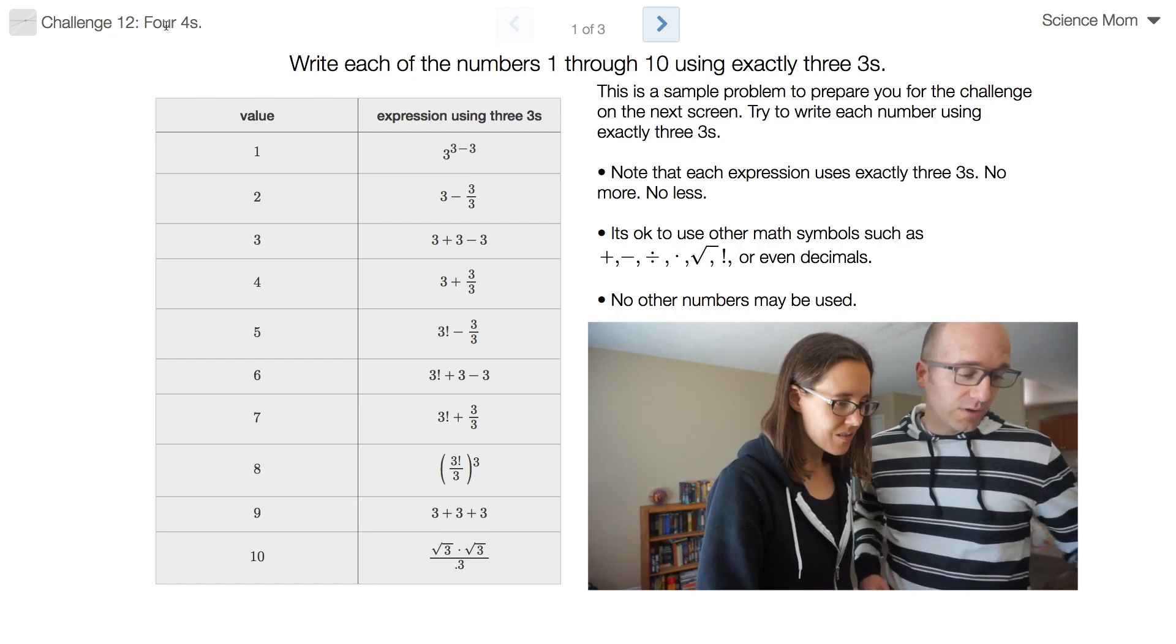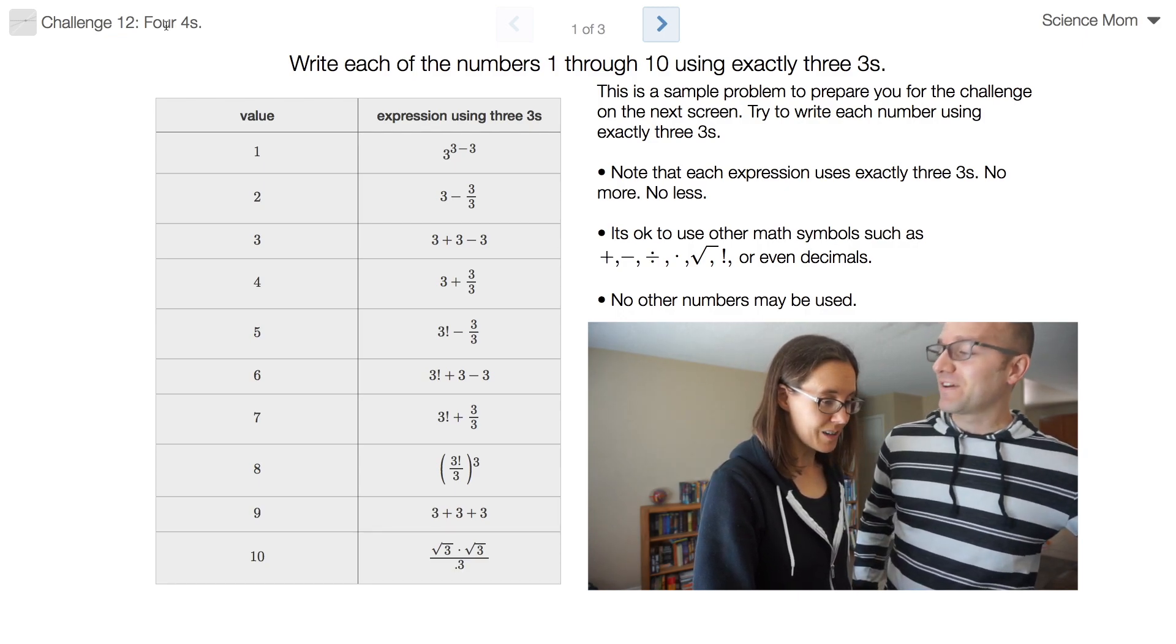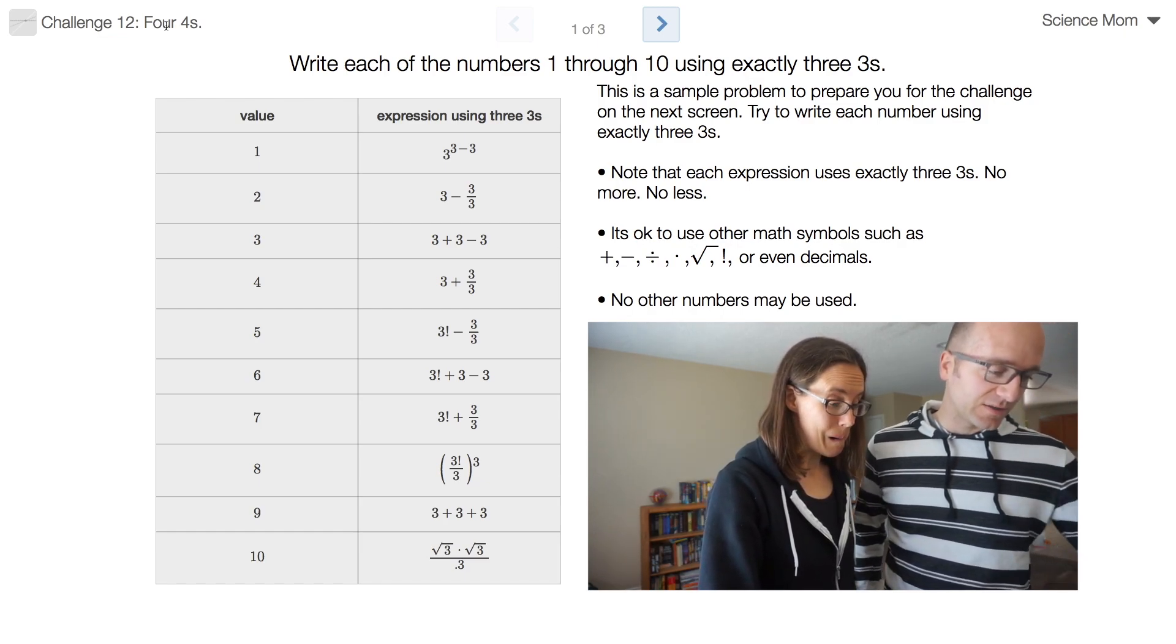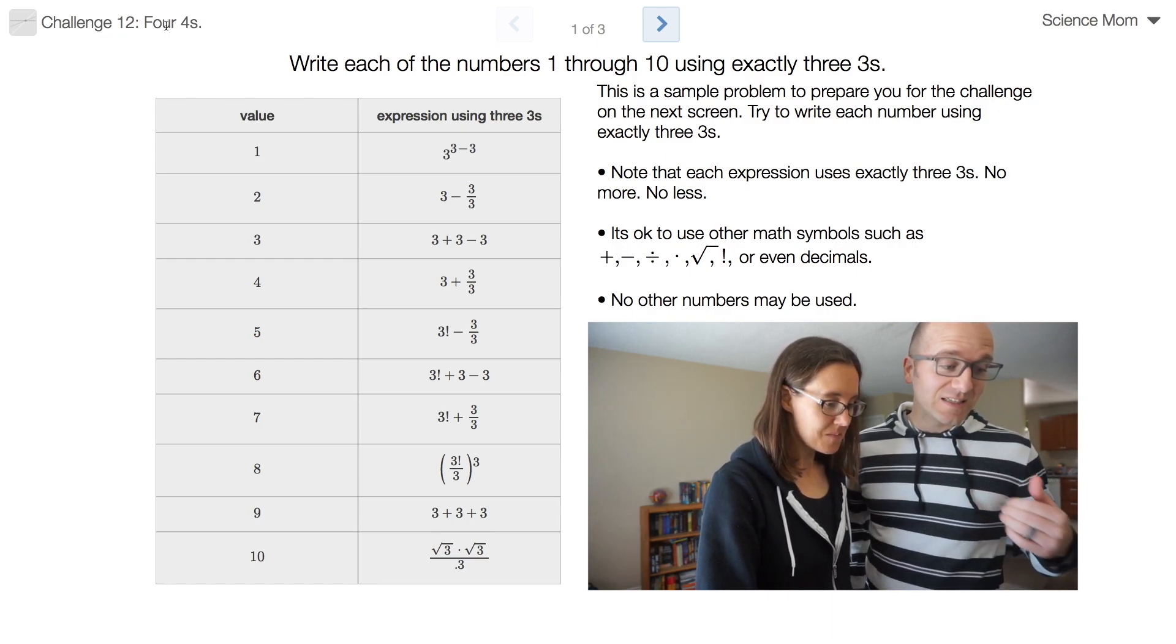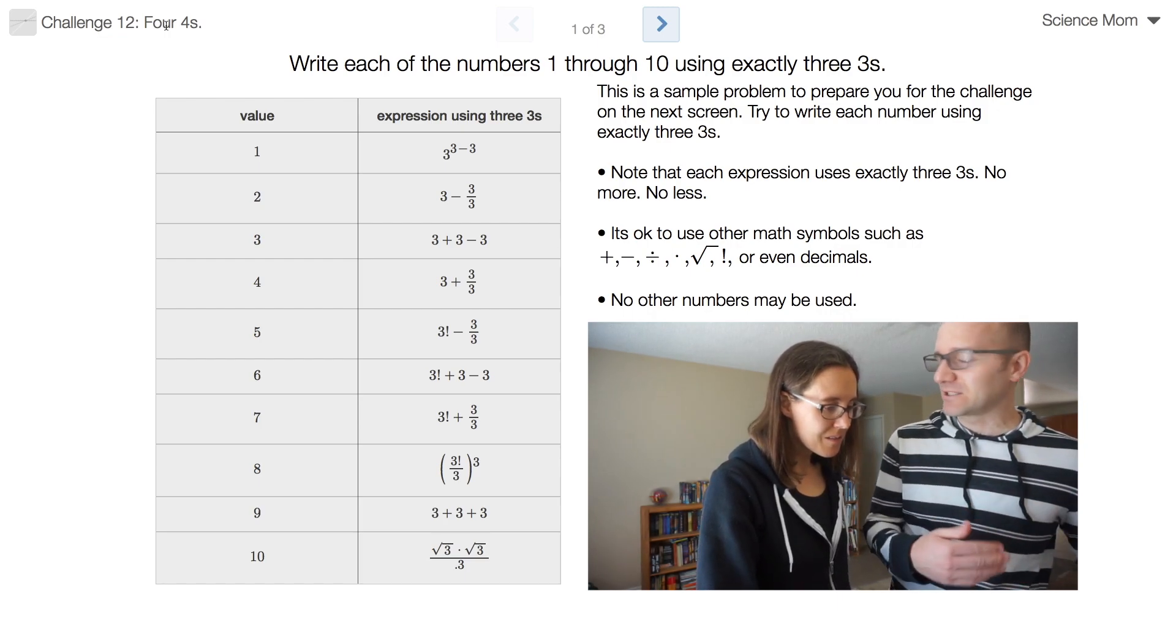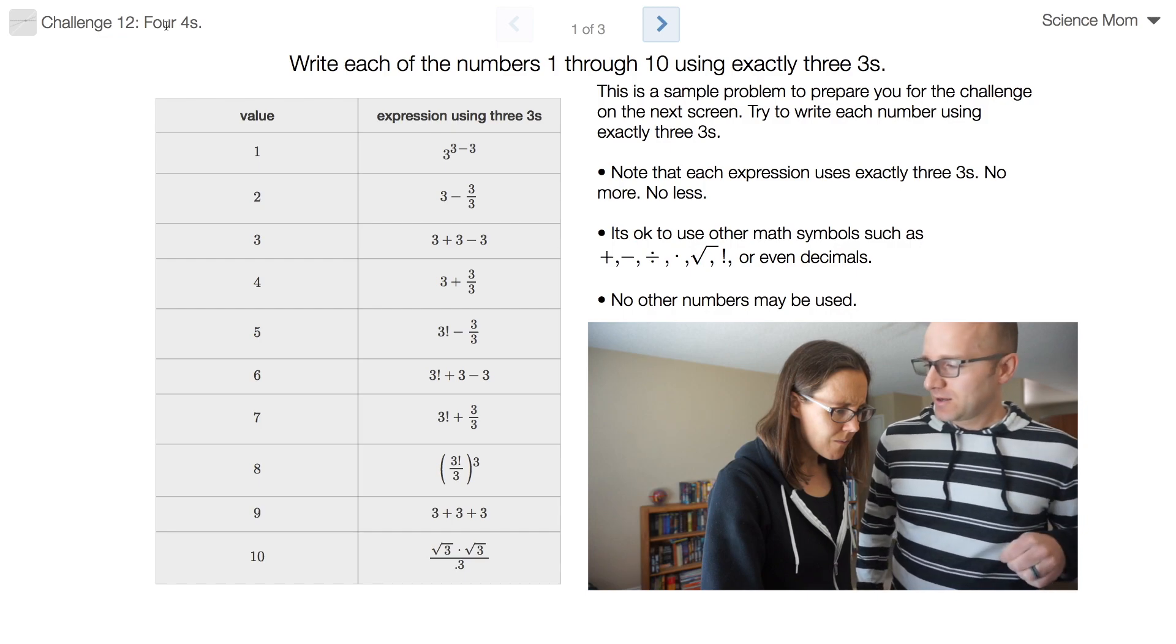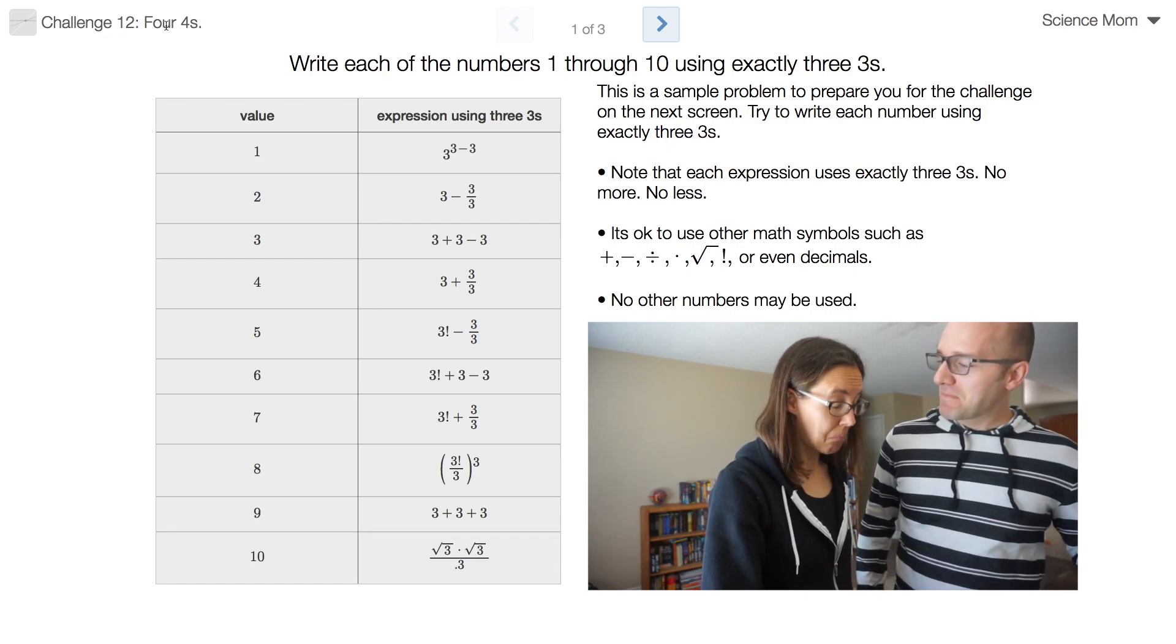Okay but it gets trickier. You see here like on the number 5 that's 3 factorial, so 3 times 2 times 1 minus quantity 3 divided by 3. That's right, so 6 minus 1. You see parentheses in there in places. You'll even see some radicals. Look down at number 10. This was the hardest one. This challenge took me like five minutes to do by myself all because of number 10. So I did square root of 3 times square root of 3 all divided by 0.3. So 3 divided by 0.3 is 10. Oh that's clever.